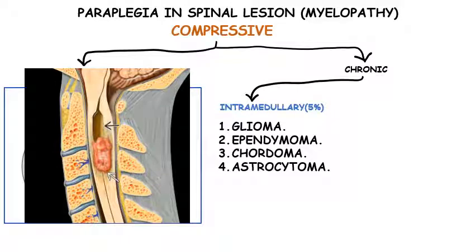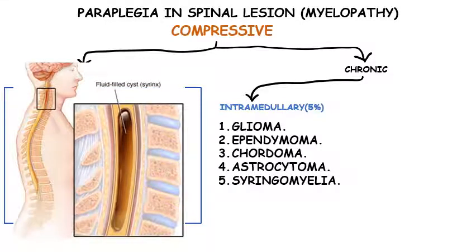Astrocytes, also known as astroglia, are characteristic star-shaped glial cells in the brain and spinal cord that perform many functions including biochemical support of endothelial cells forming the blood-brain barrier. Astrocytomas are the most common glioma and can occur in most parts of the brain and occasionally in the spinal cord. Syringomyelia is a disorder in which a cyst or cavity, called a syrinx, forms within the spinal cord and can expand and elongate over time, destroying the cord. It may occur due to Arnold-Chiari malformation, or as a complication of trauma, meningitis, hemorrhage, a tumour, or arachnoiditis, after which the syrinx starts to expand.